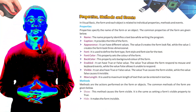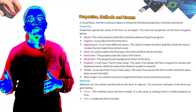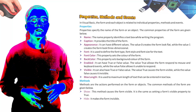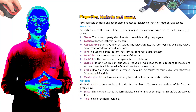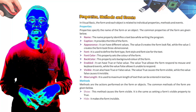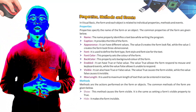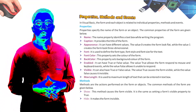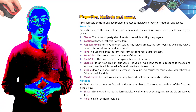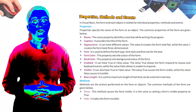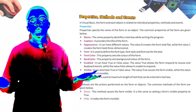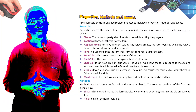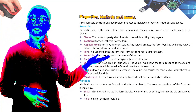Enabled can have a True or False value. True allows the form to respond to mouse and keyboard events, while False makes it unable to respond. Visible can also have True or False value — True causes the form to be visible while False causes it to be invisible. MaxLength is used to set the maximum length of text that can be entered in a text box.